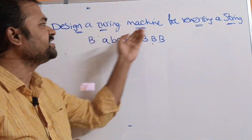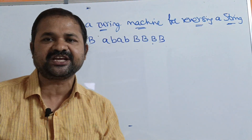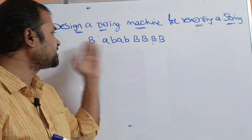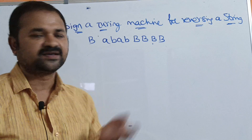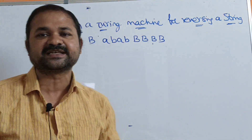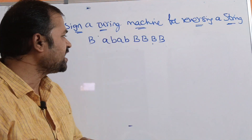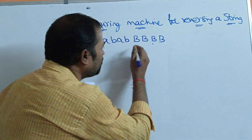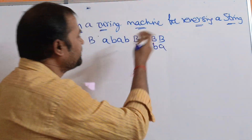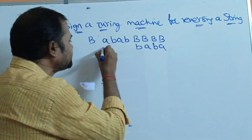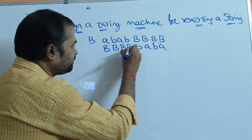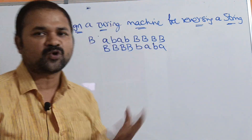Let's see this example. Design a Turing machine for reversing a string. Let the string be ABAB. Before the string, we can have any number of blank spaces. After the string also, we can have any number of blank spaces. The reverse of ABAB is BABA. In place of the blank symbols, we have to display the reverse string BABA, and in place of the original string, we replace them by blank symbols.